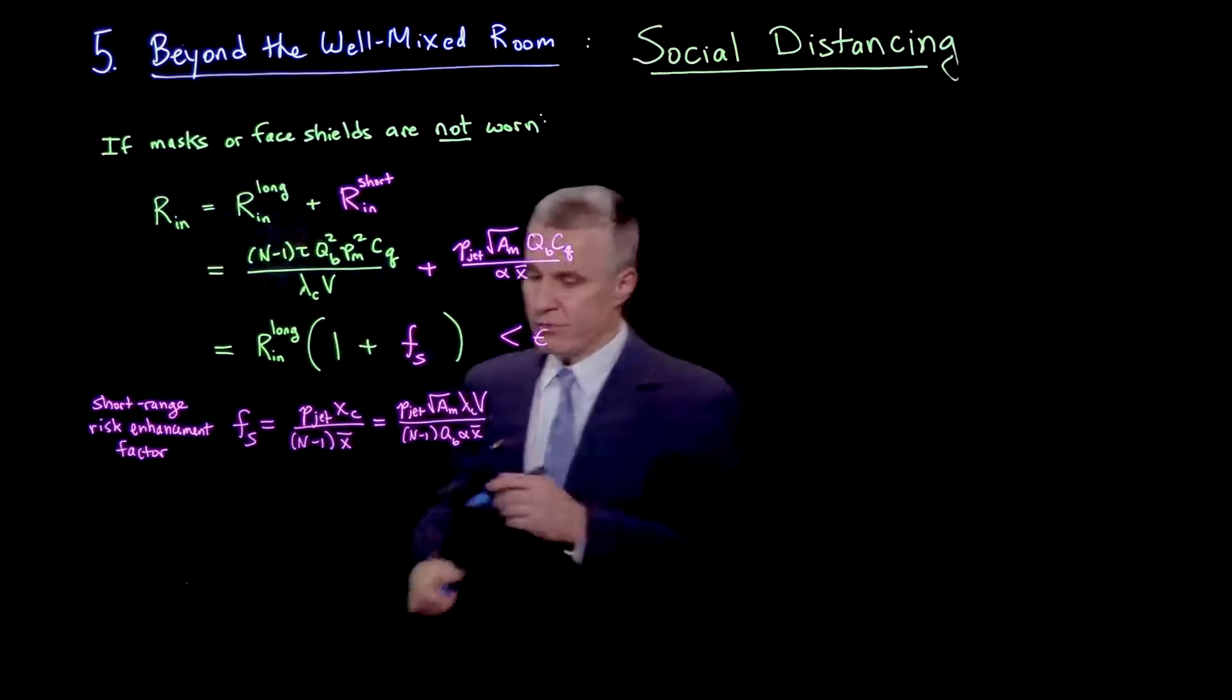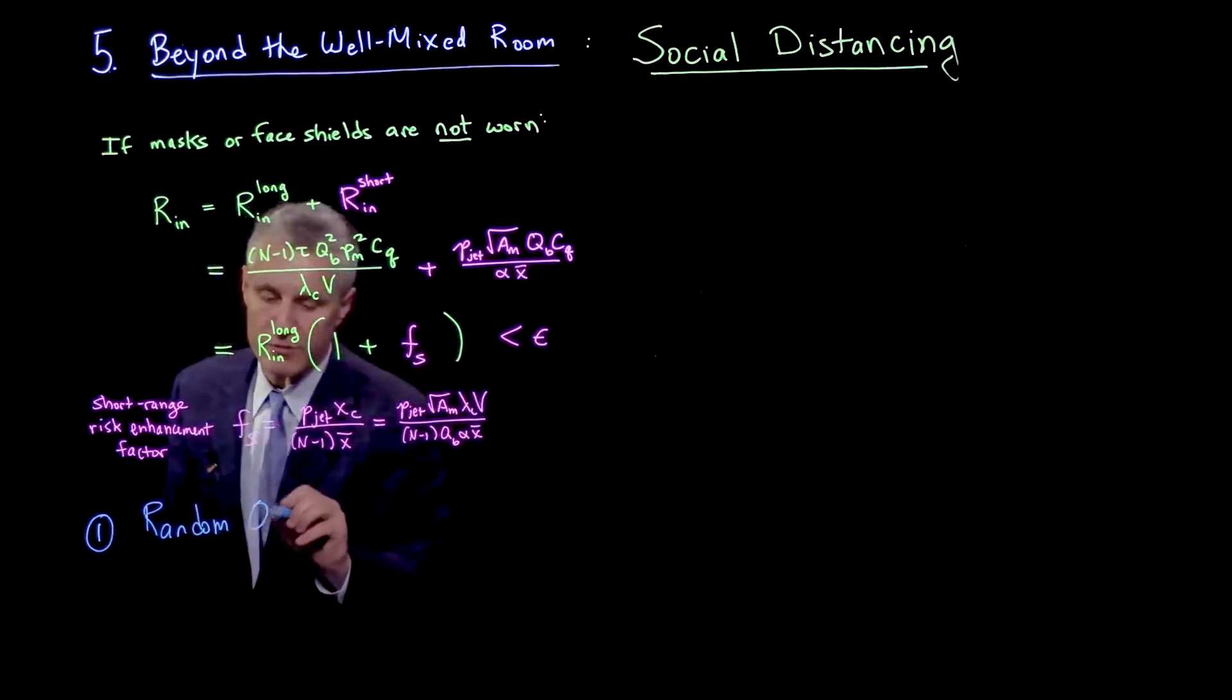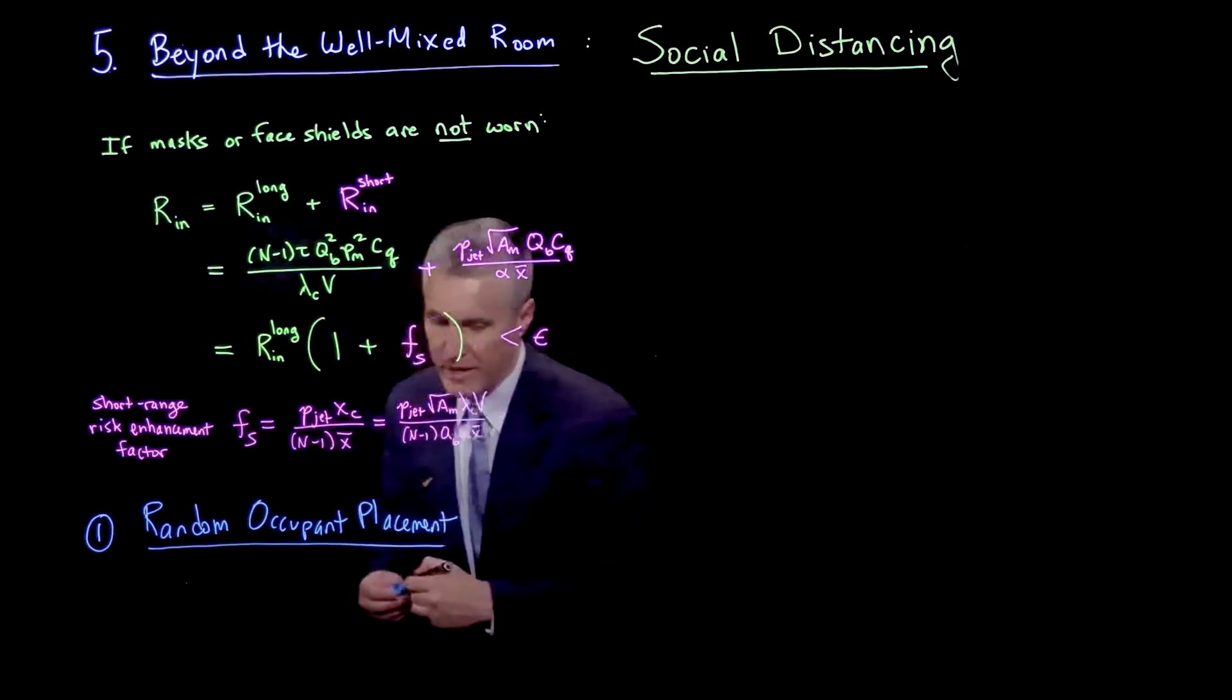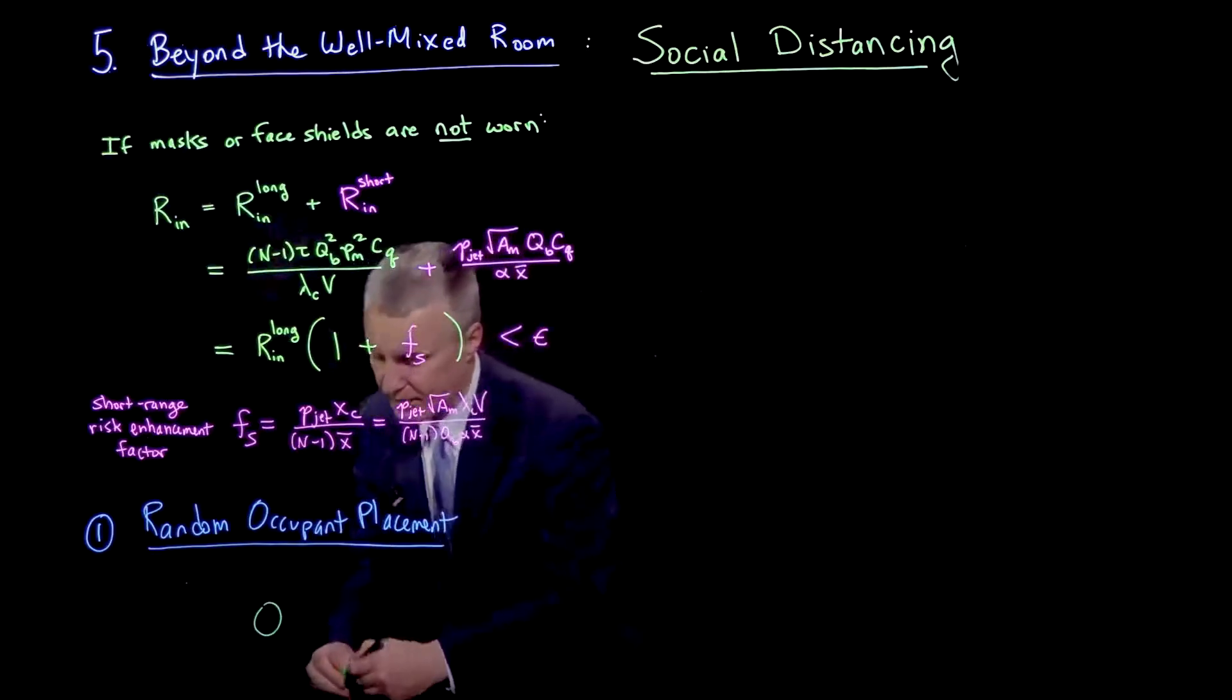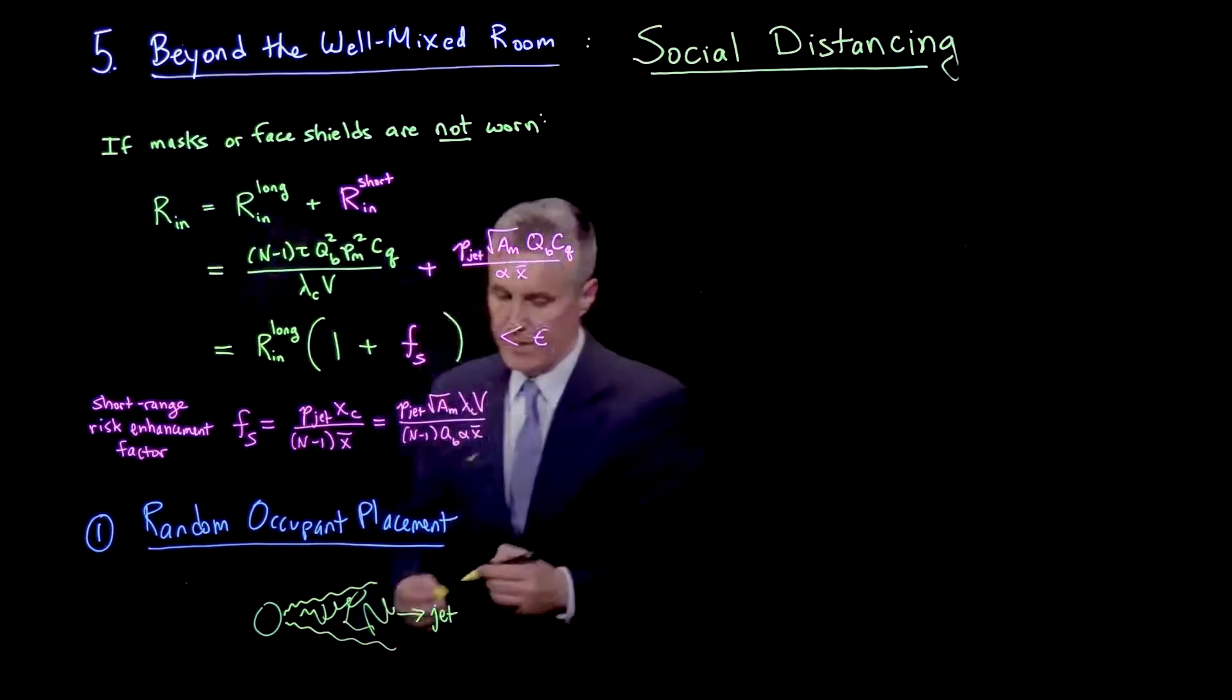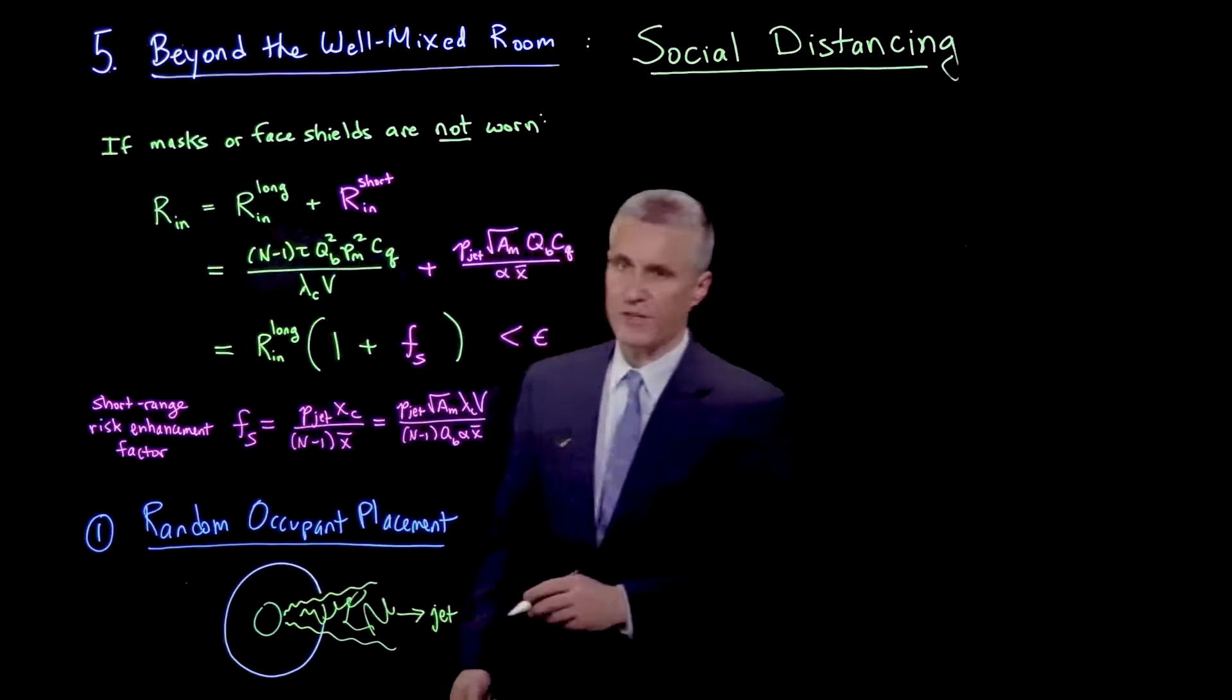There are a number of situations we can think of to estimate what would be these parameters. The first would be to consider random occupant placement. In this situation, if we view from above, we have a person, and they have a respiratory jet which is going off like this in one direction.